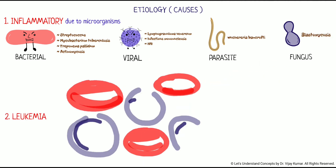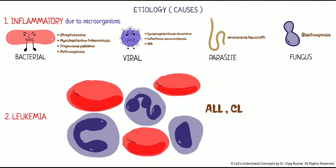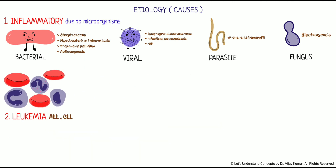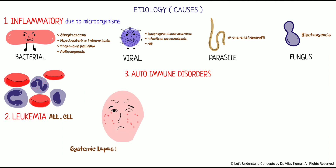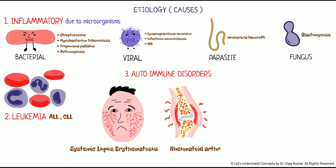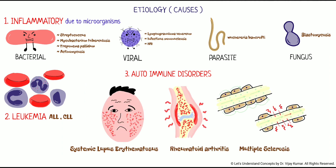Second, leukemia — in acute lymphocytic leukemia or in chronic lymphocytic leukemia. Third, autoimmune disorders. For example, systemic lupus erythematosus, rheumatoid arthritis, multiple sclerosis.